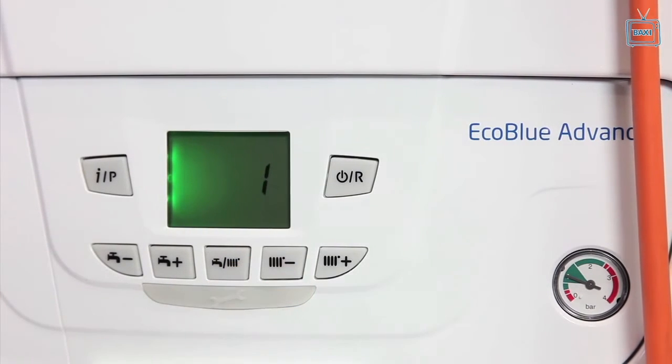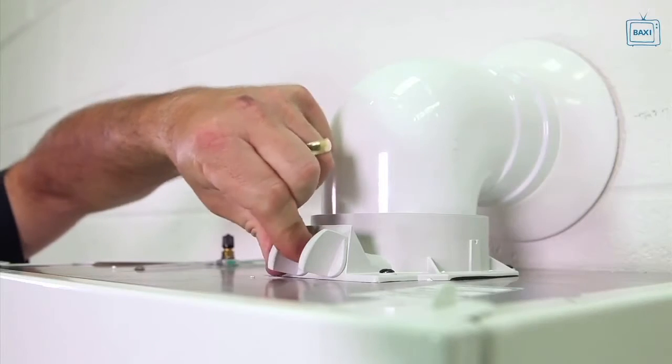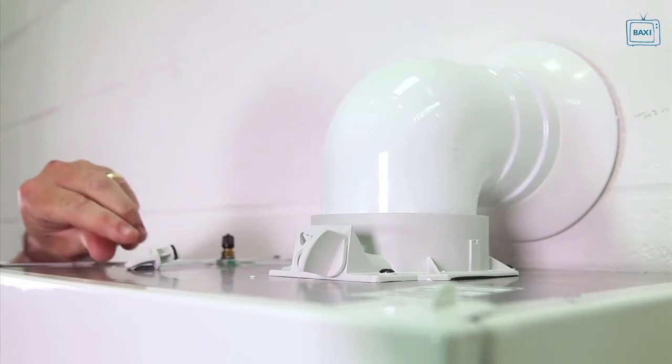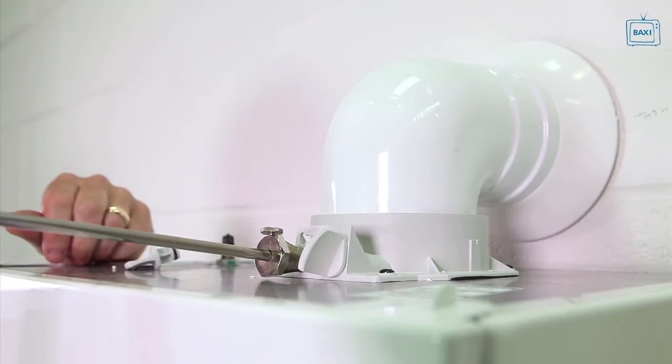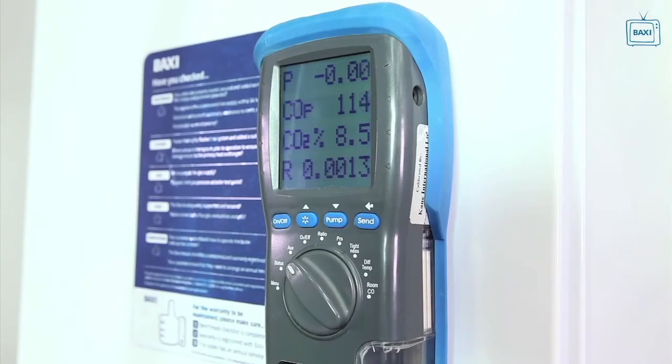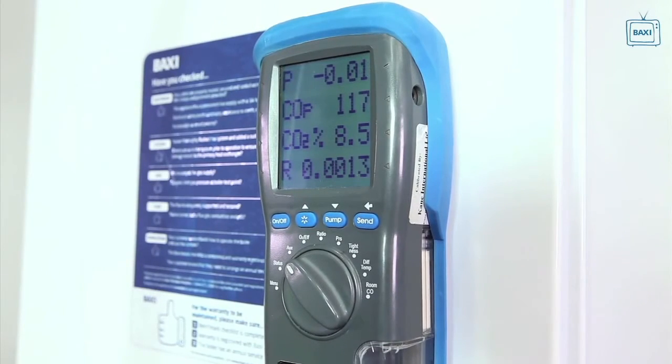Set the boiler to the minimum rate and allow the combustion to stabilise. Insert the analyzer probe into the flue gas test point, allowing the reading to stabilise. A positive check will show a reading of 8.4% plus or minus 0.2%.